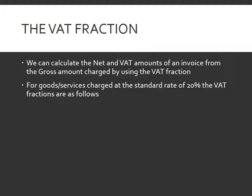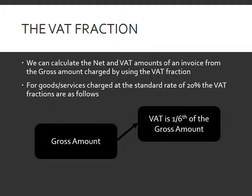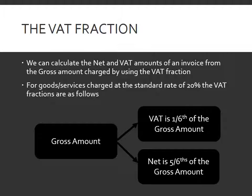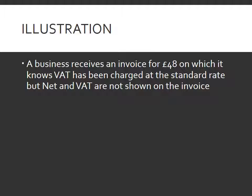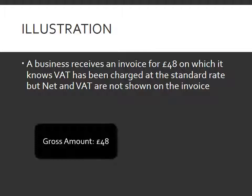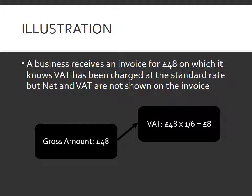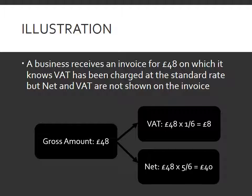Where goods and services have been charged at the standard rate of VAT — that is 20% — the fractions are as follows. We take our gross amount, and the VAT is going to be one-sixth of the gross amount. The net, however, is going to be five-sixths of the gross amount. For example, a business receives an invoice for £48, and it knows that VAT is included at the standard rate, but the net and VAT amounts are not shown separately. The VAT element will be one-sixth of £48, or £8. The net amount will be the remainder, five-sixths of £48, or £40. And that's how we calculate the net and VAT amounts of an invoice where only the gross amount is shown.